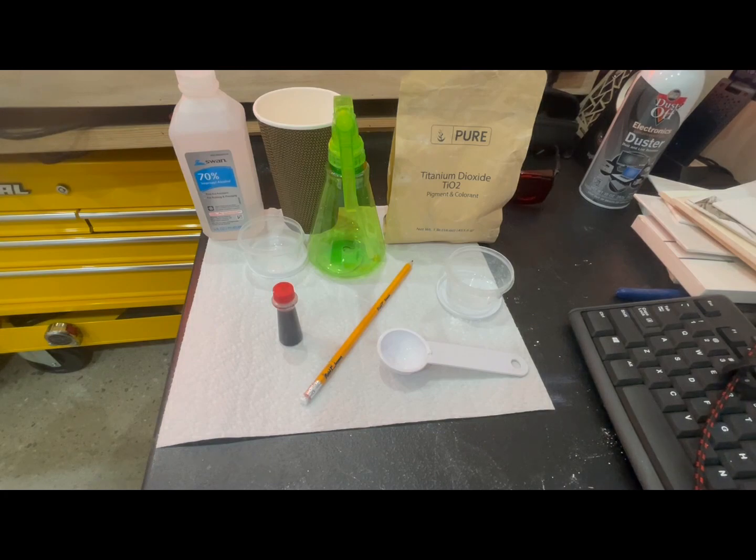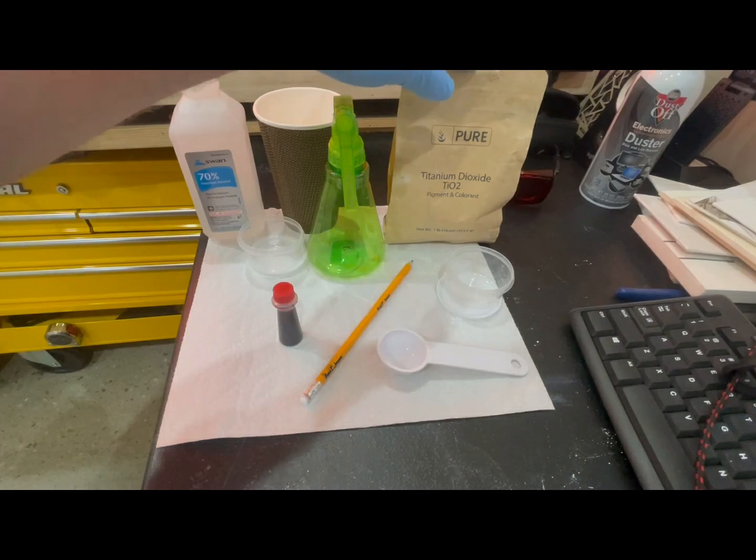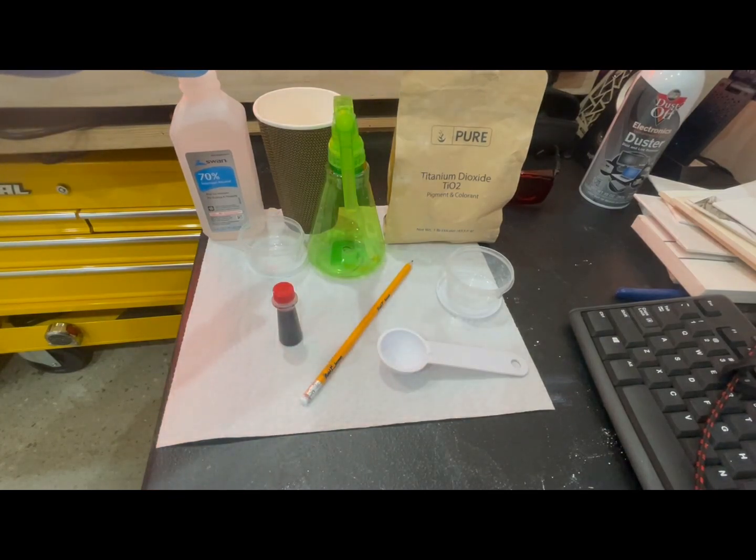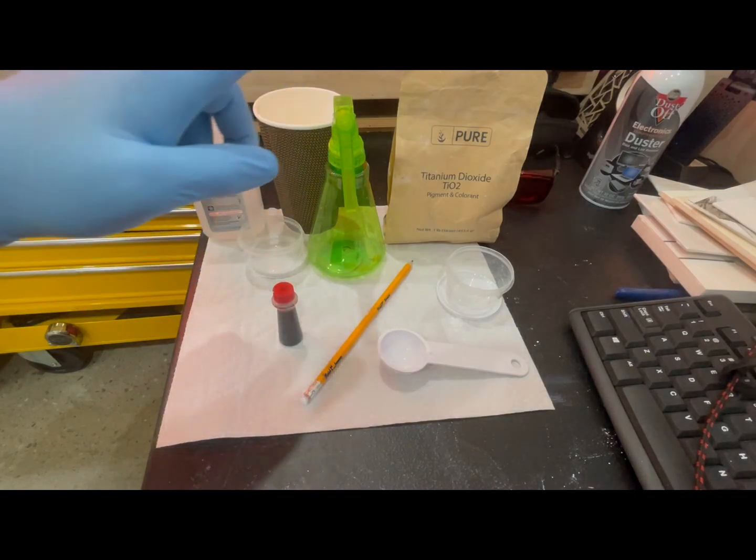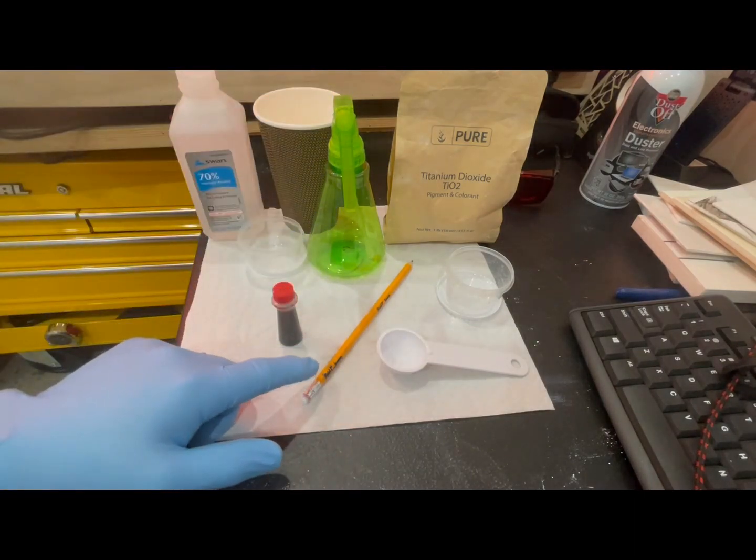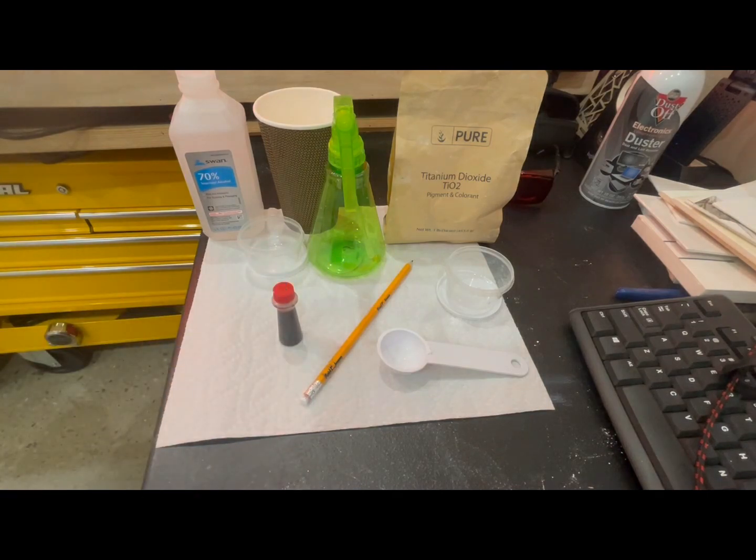What I have is pure titanium dioxide, isopropyl alcohol, two small measuring cups, a spray bottle, a pencil, and food coloring. How I go about doing this is I take the titanium dioxide and use my scooper to fill up my small measuring cups.